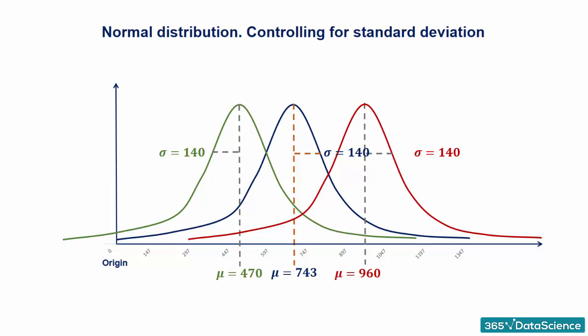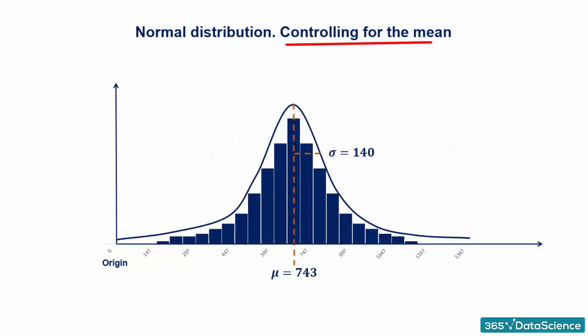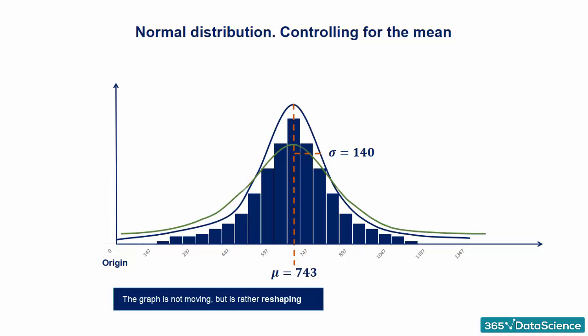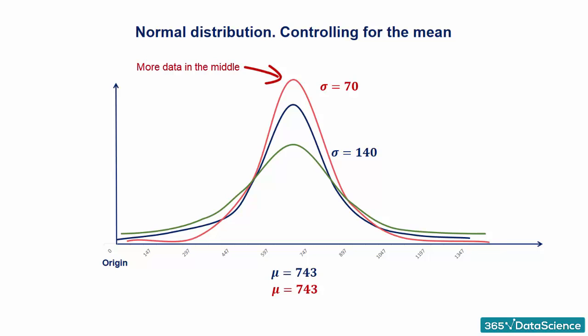Alright, let's do the opposite. Controlling for the mean, we can change the standard deviation and see what happens. This time, the graph is not moving, but is rather reshaping. A lower standard deviation results in lower dispersion, so more data in the middle and thinner tails.